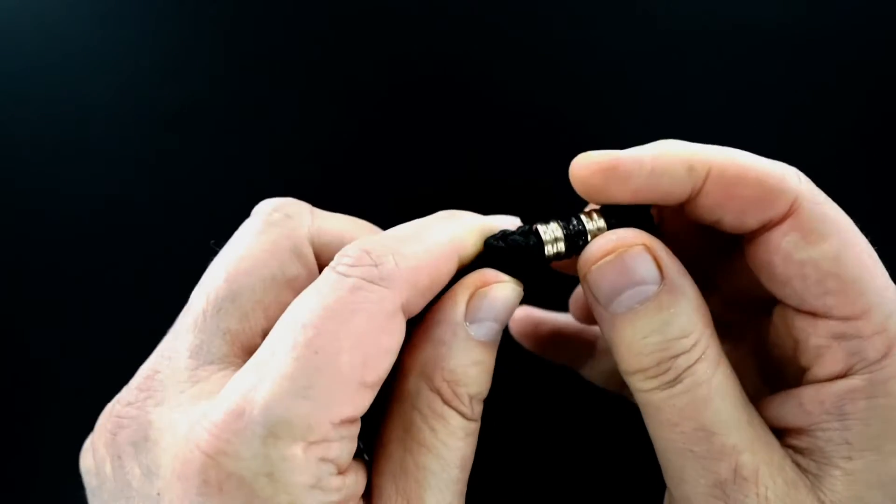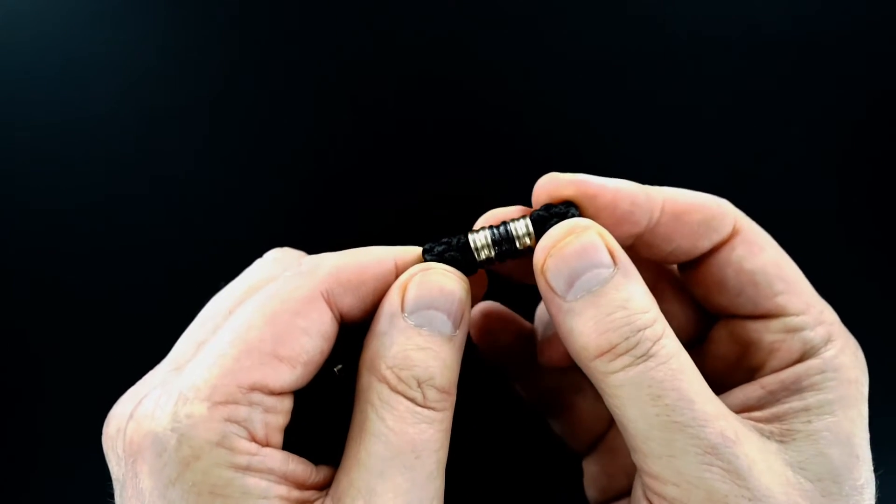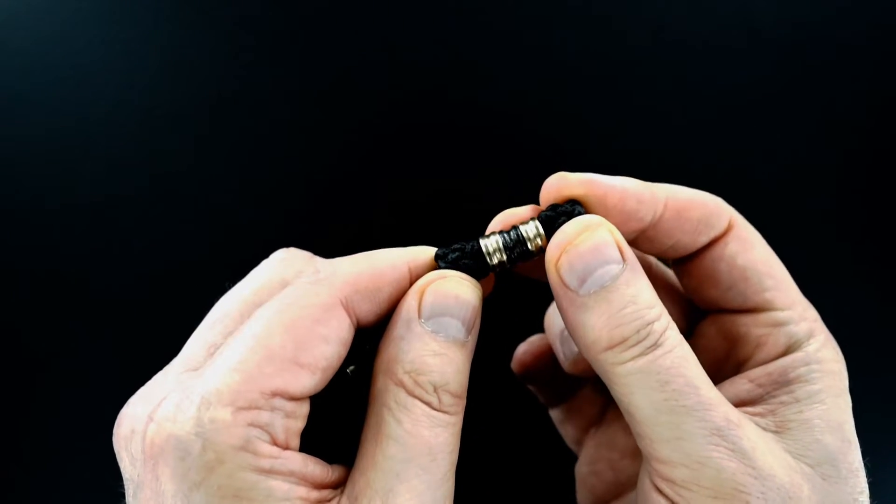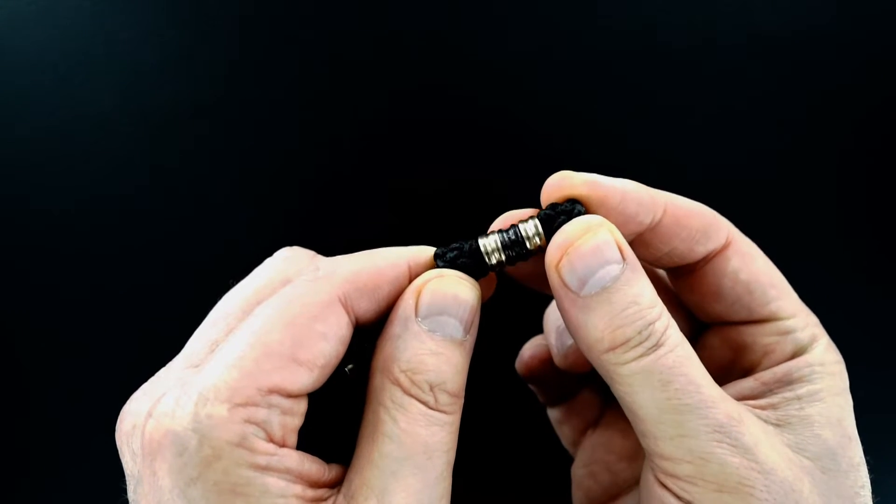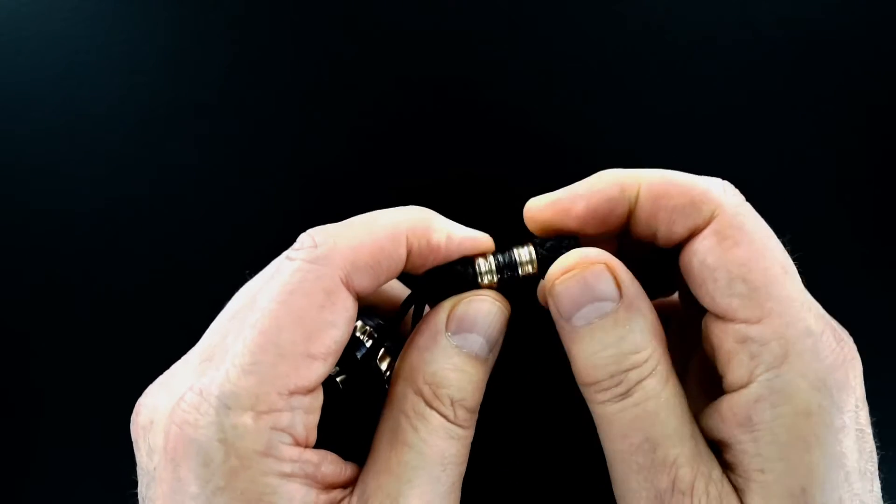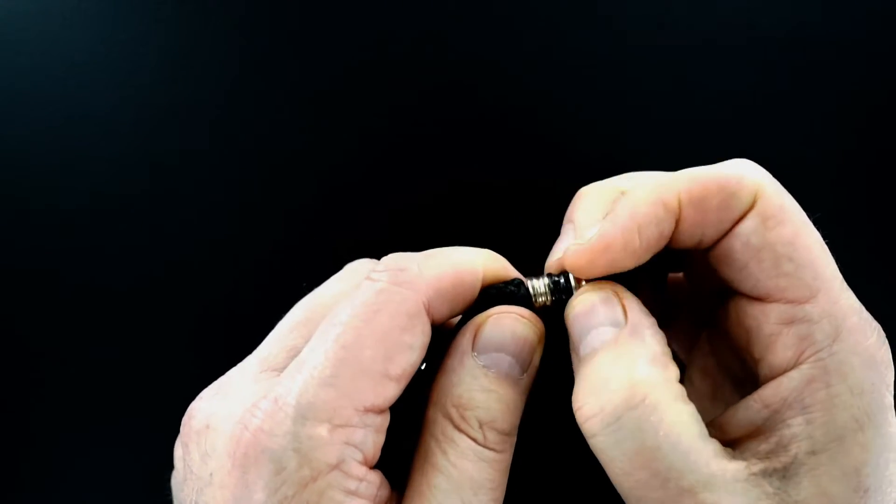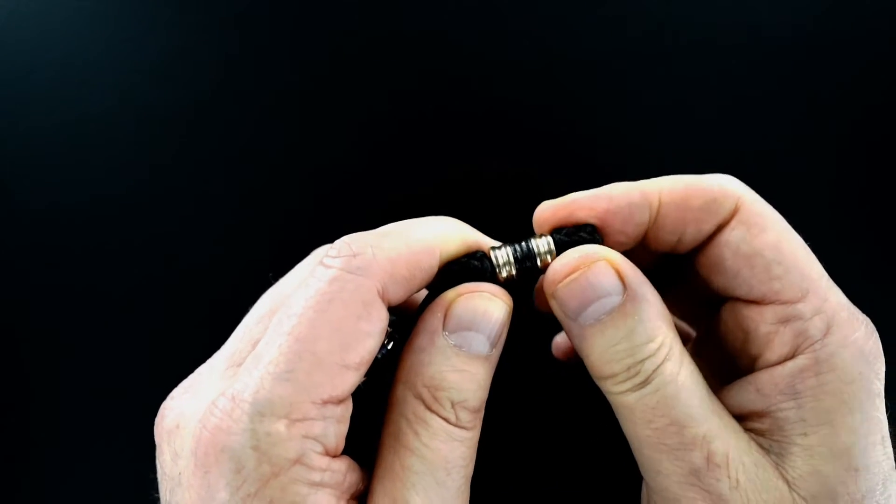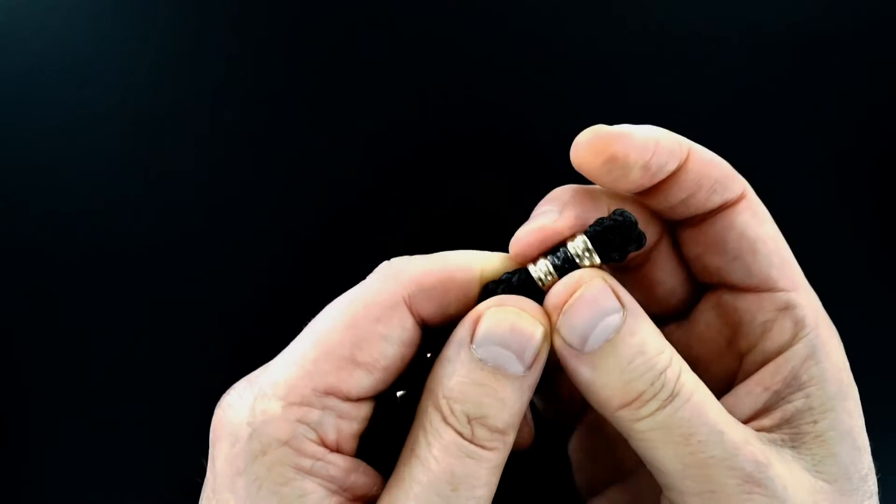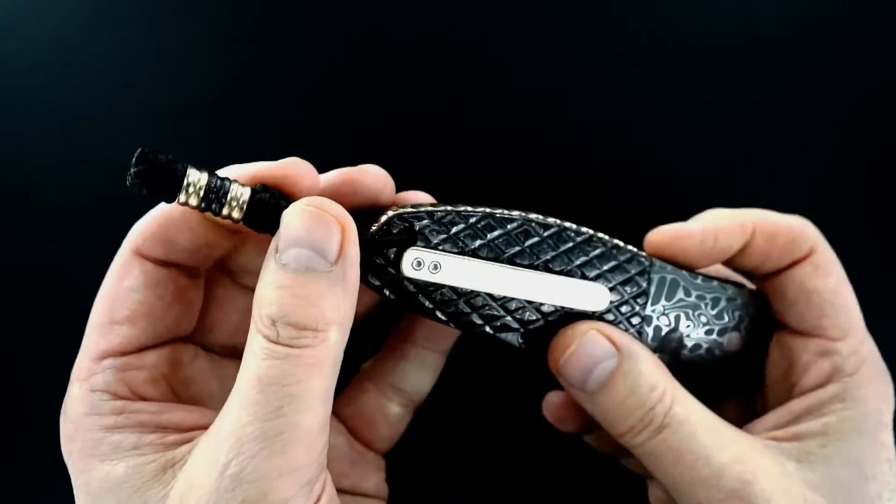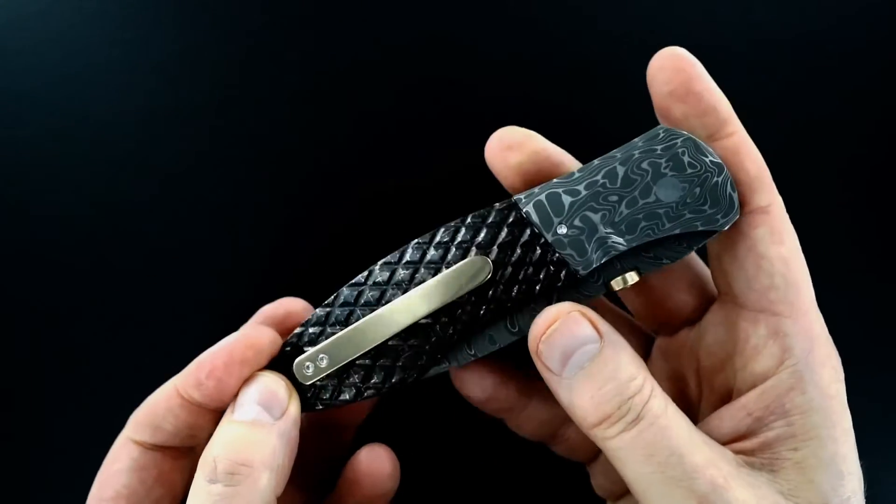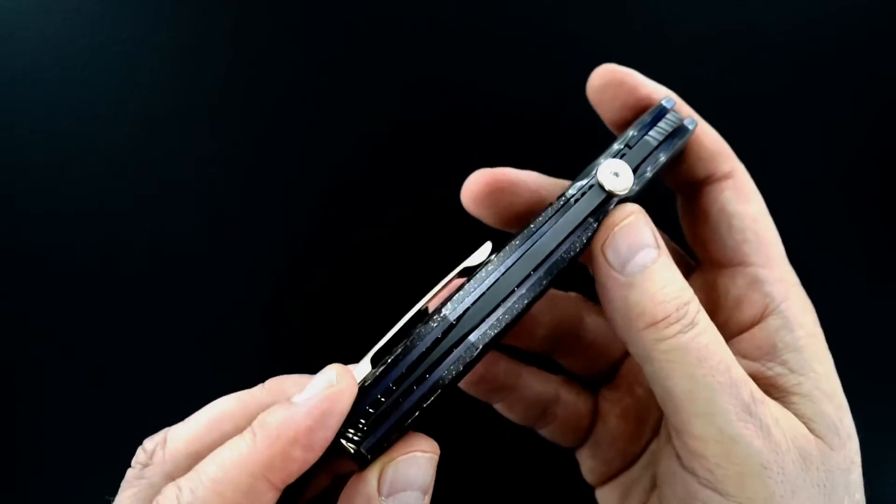This is a three-part bead that John made. It's a lightning strike carbon fiber center and two brass outside beads, so it's a three-part bead to match the rest of the knife.